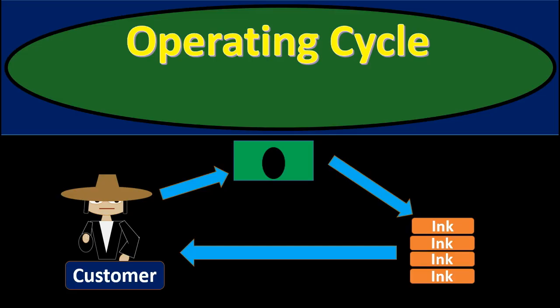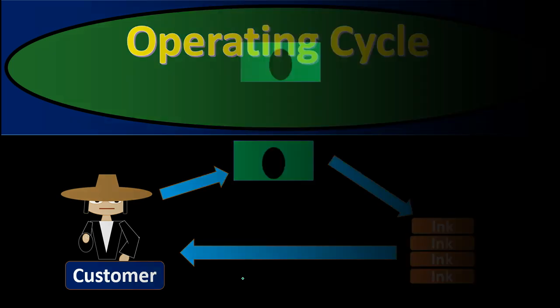When we think about the operating cycle for a merchandising company, we can contrast this to a service company — a service company providing a service in order to generate revenue, and a merchandising company providing merchandise. The merchandise is an added factor, adding a bit more complexity to the cycle, and is what we want to concentrate on as the new, different thing as we move from a service company to a merchandising company.